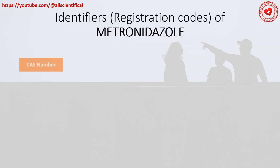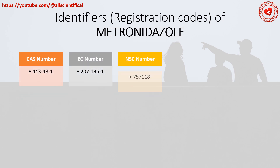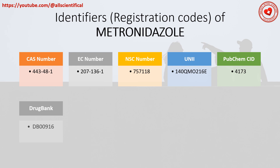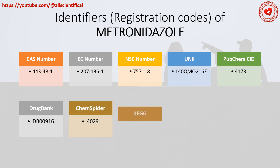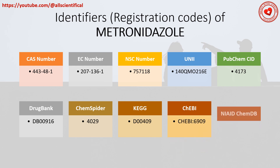Registration codes of metronidazole: CAS No. 443-48-1, AC No. 207136-1, NC Chain No. 757118, PubChem CID 4173, DrugBank DB00916.